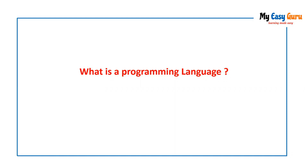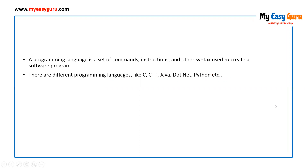What is a programming language? Basically, a programming language is simply a medium which we use to communicate with the computers, which we use to communicate with the systems. Programming language is nothing but a set of commands, instructions, or syntaxes that we use to create a software program.